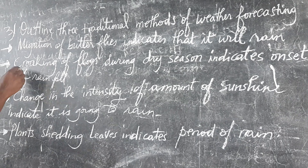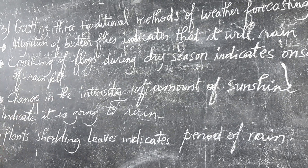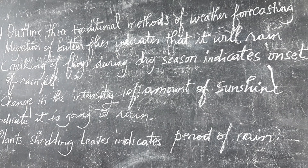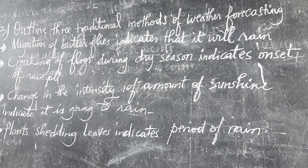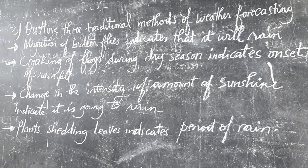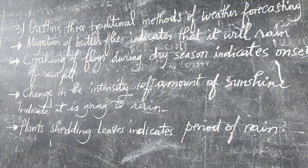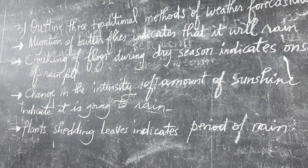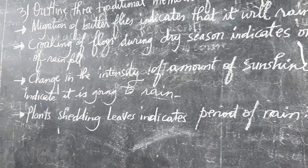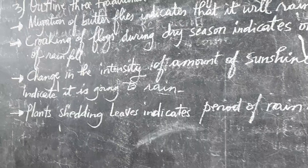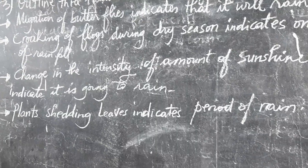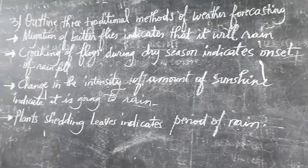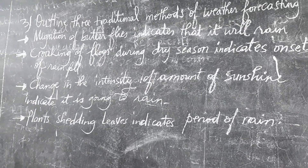Method number two: the croaking of frogs during the dry season indicates the onset of rain. During dry season, when frogs were croaking, that event also indicated that rainfall was about to fall. So it was another traditional method of weather forecasting.